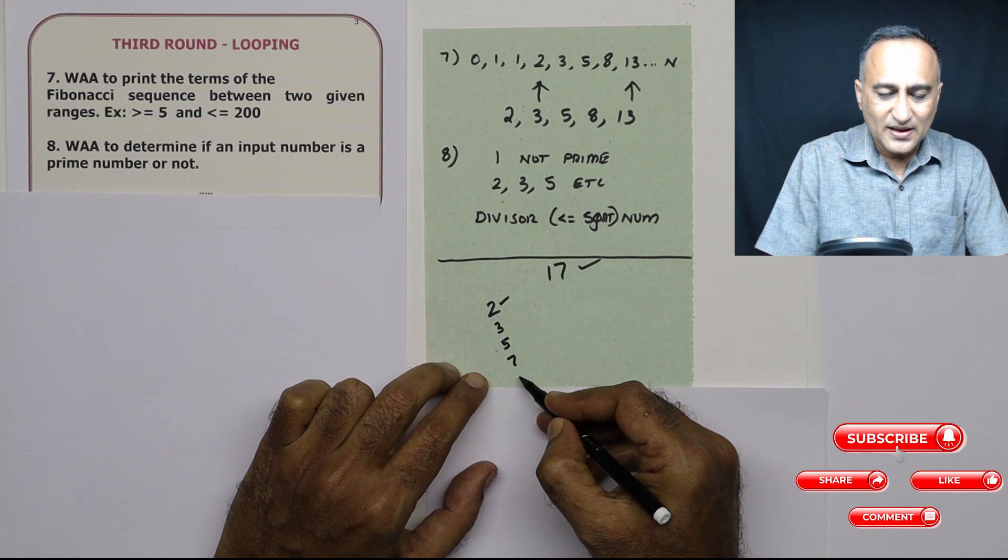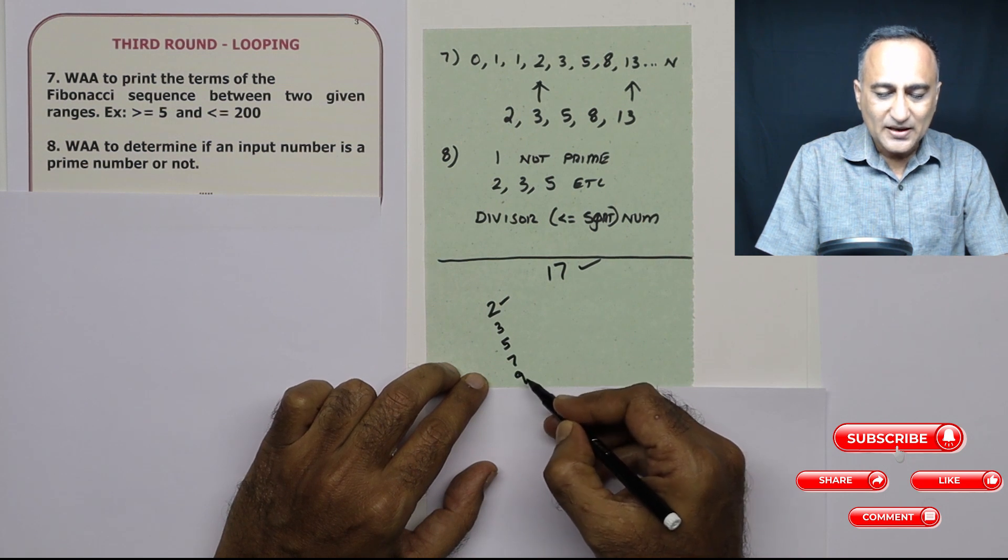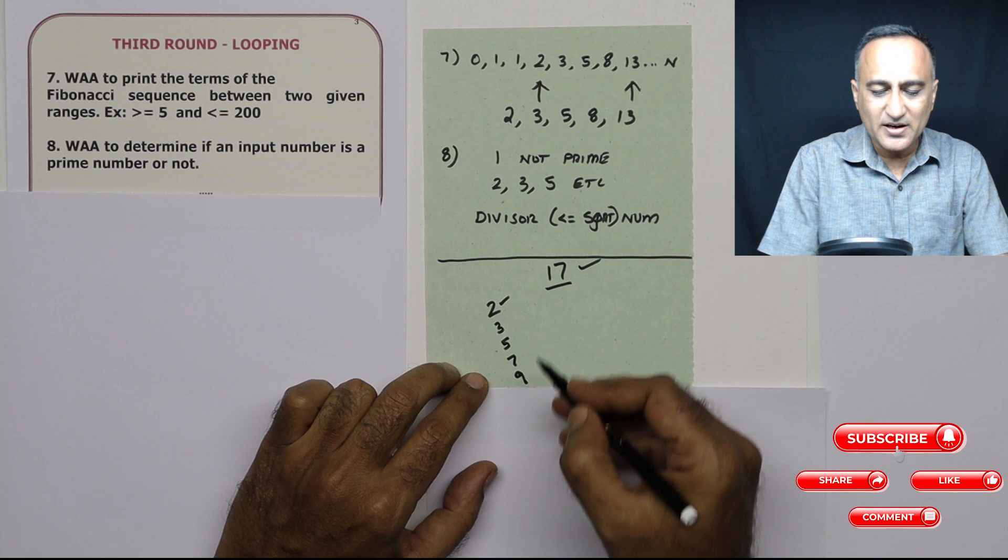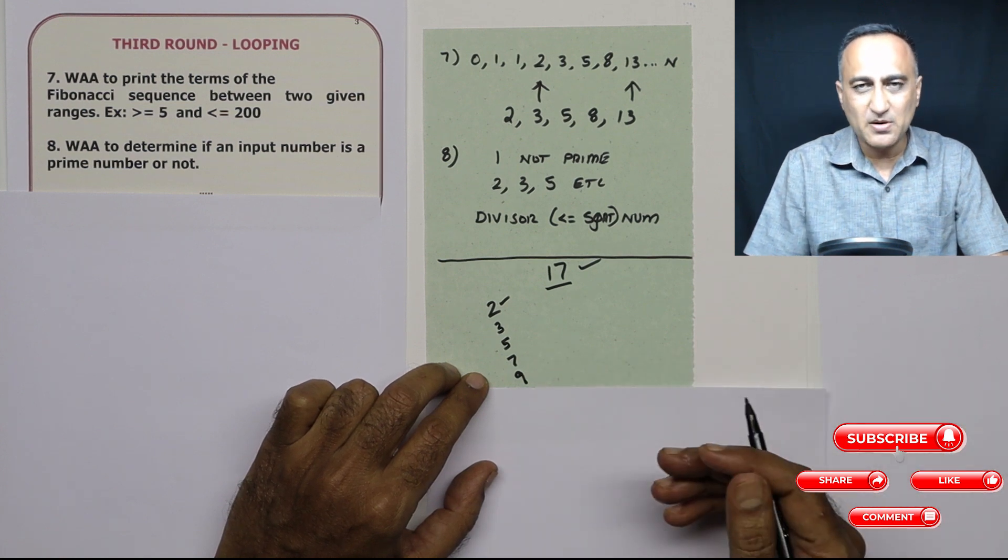This is also fine. Then I go with nine. Beyond nine, no point because the highest number which 17 can be divided by is maximum 8.5. Now there's one more mathematical fact: the divisor which can divide 17 is always going to be less than or equal to the square root of 17.